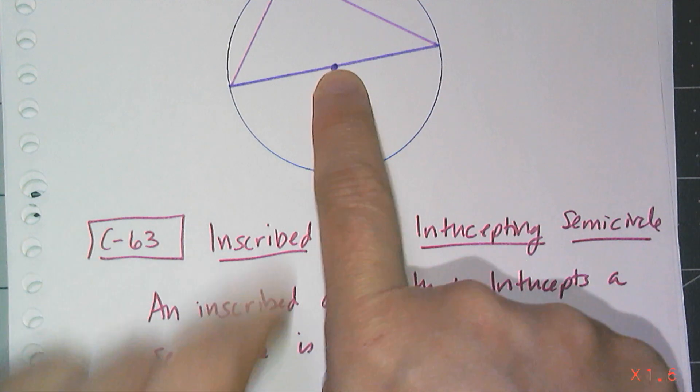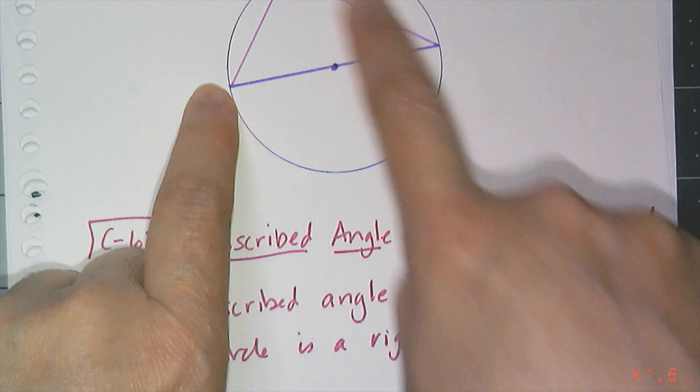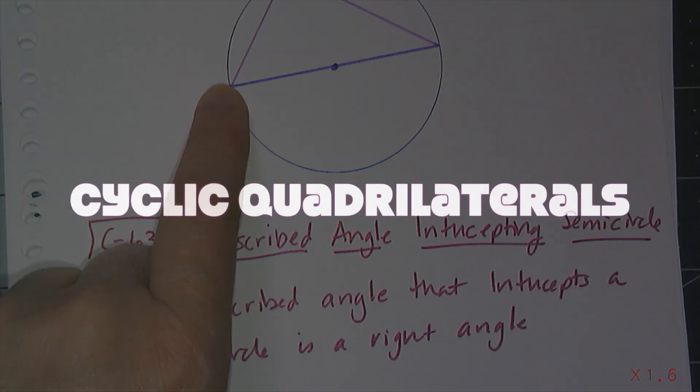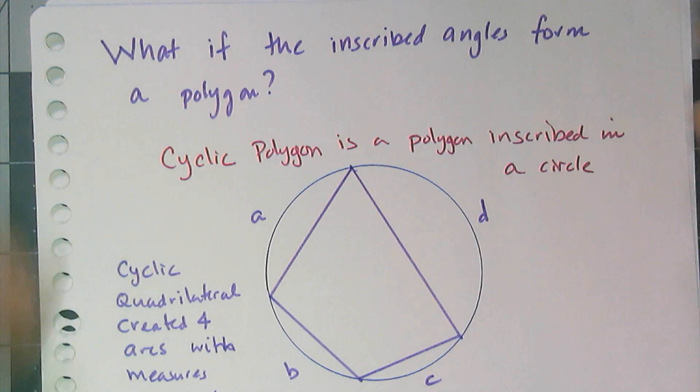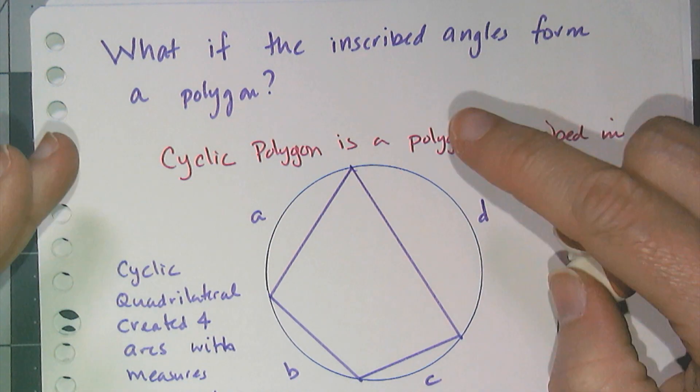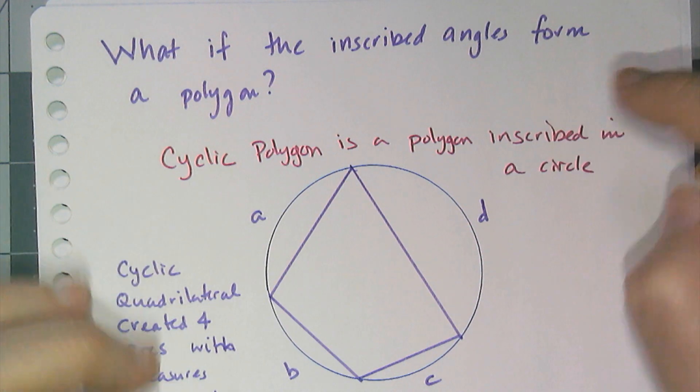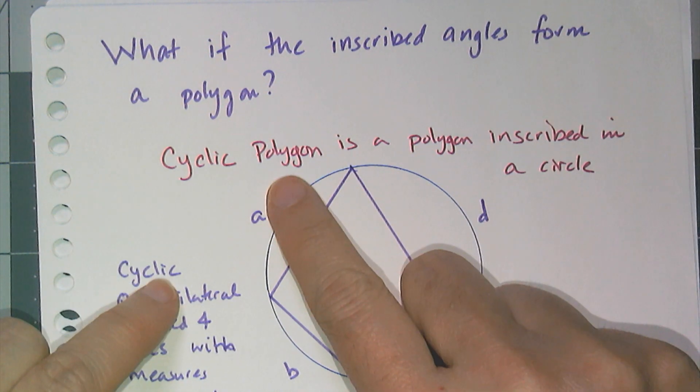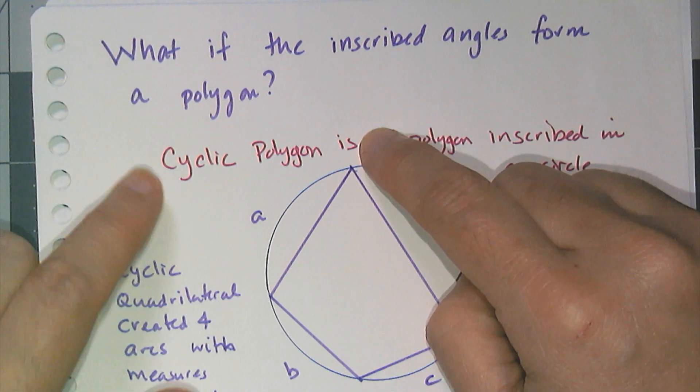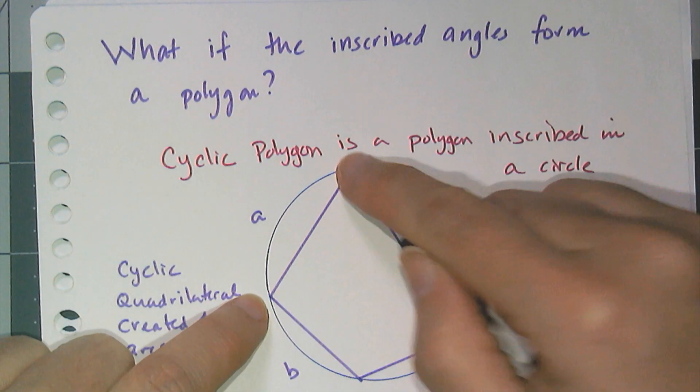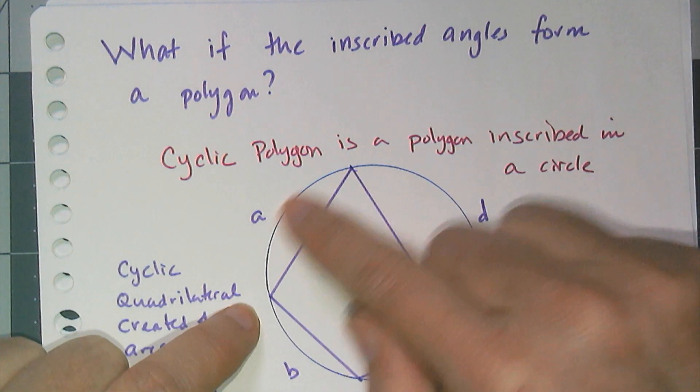So I'll show you how to use inscribed angles to form a polygon. Now in this case, the polygon is going to be called a cyclic polygon. Any polygon that is inscribed in a circle is referred to as a cyclic polygon. And remember, inscribed means the vertices of the polygon are all going to be on that same circle.